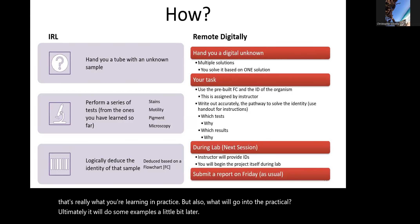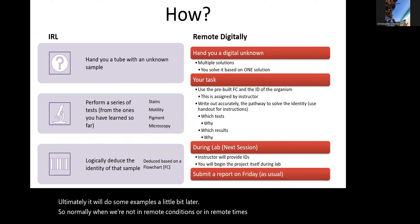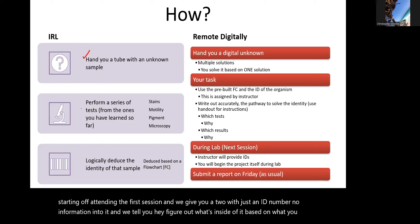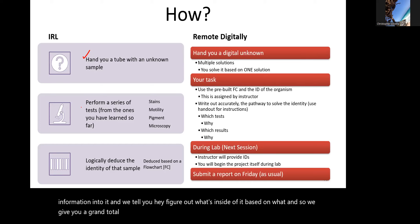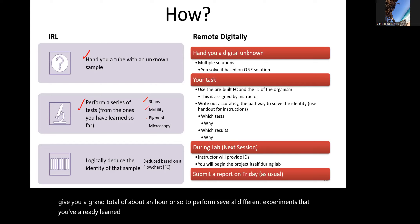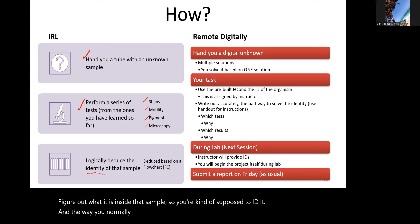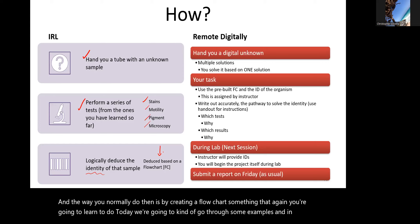Normally when not in remote conditions, this project starts by attending the first session where you're given a tube with just an ID number — no information — and told to figure out what's inside based on what you know. You get about an hour to perform experiments you've already learned: stains, motility, pigment, microscopy. You identify the sample by creating a flow chart, which we'll practice today.